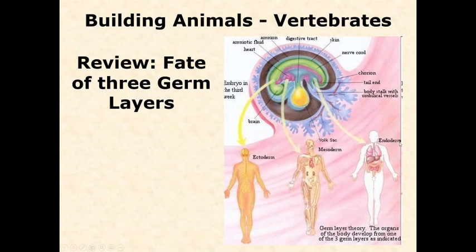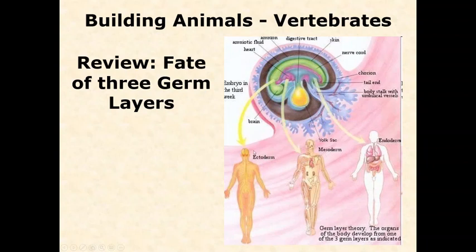The names are fairly explanatory: ectoderm means tissue on the surface, mesoderm means tissue in the middle, and endoderm means tissue on the inside. The early ectoderm becomes the skin, and parts of your digestive and upper respiratory tract. Interestingly, the nervous system also comes from the ectoderm, which is surprising since the brain is very internal. We'll talk about how ectodermal tissue gets internalized. So ectoderm gives rise to epidermis and the nervous system.